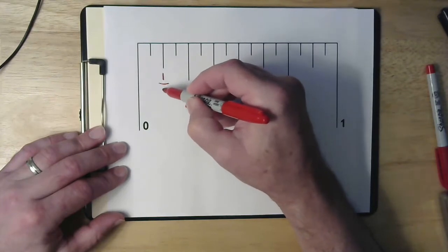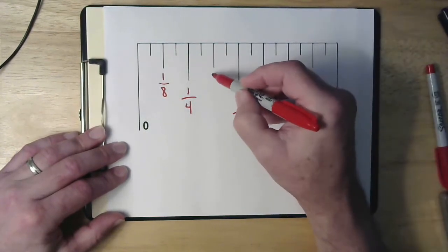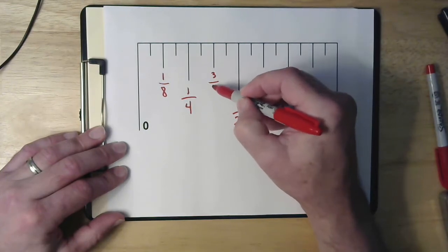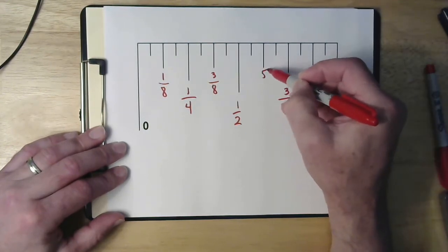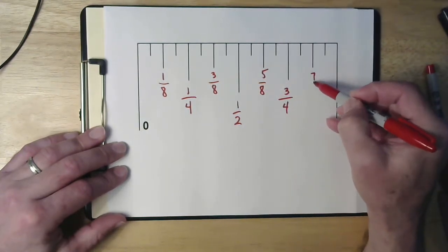So on this thing, this is going to be one eighth. This is one quarter, which is two eighths. That makes this three eighths, four eighths, five eighths, six eighths, seven eighths.